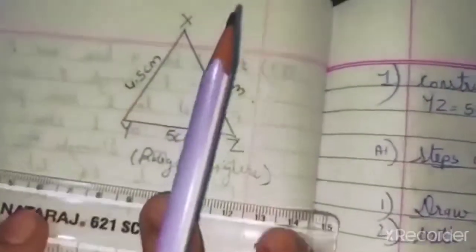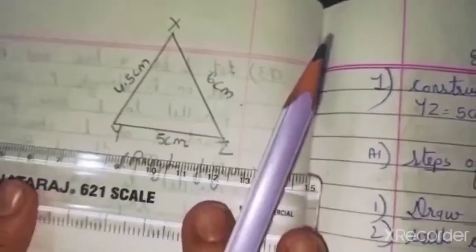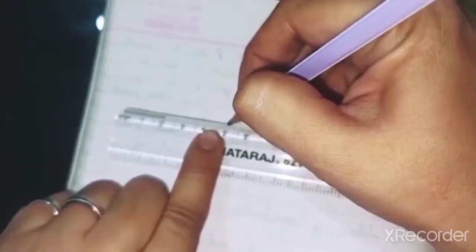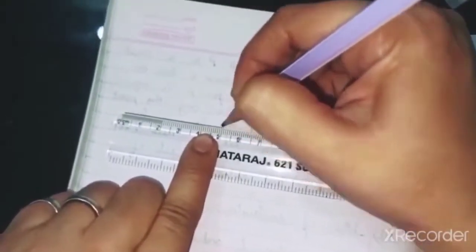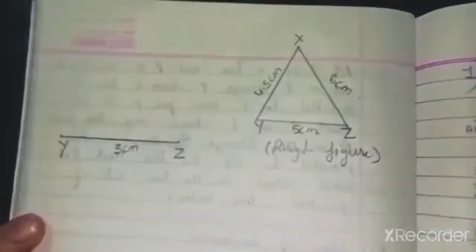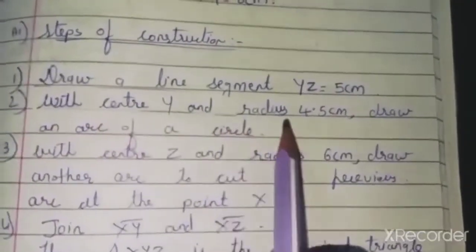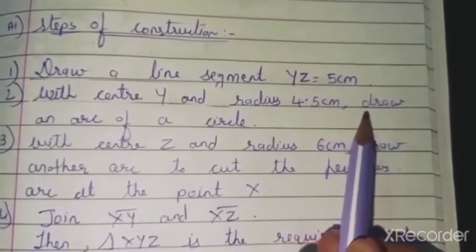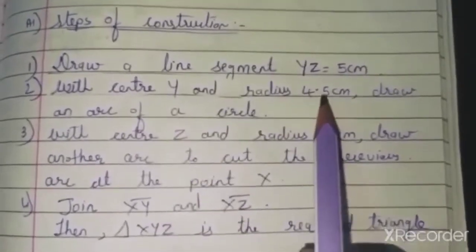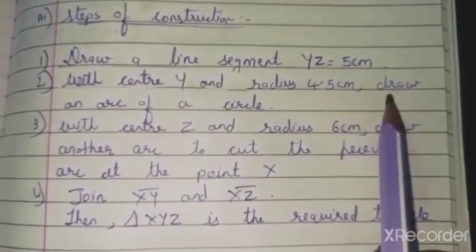Step 1: Draw a line segment YZ equal to 5 cm. Here I will draw YZ from 0 to 5 cm. With center Y and radius 4.5 cm, draw an arc of a circle.